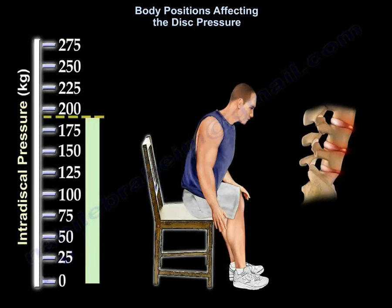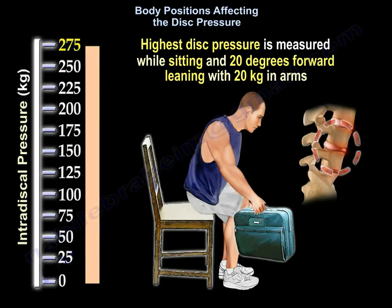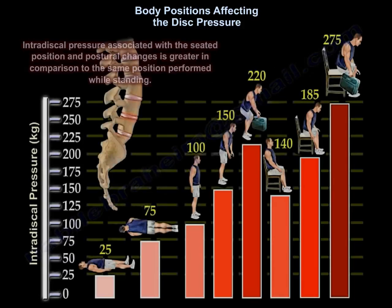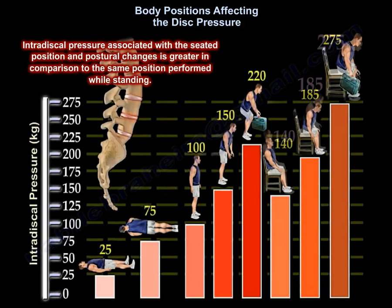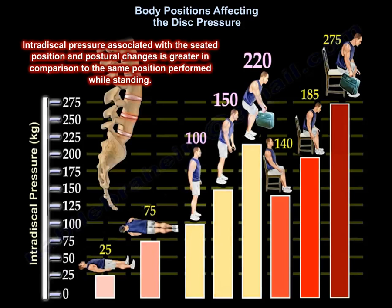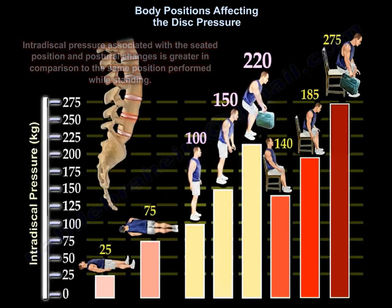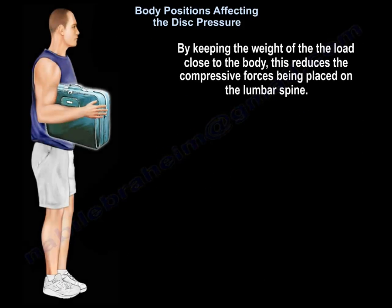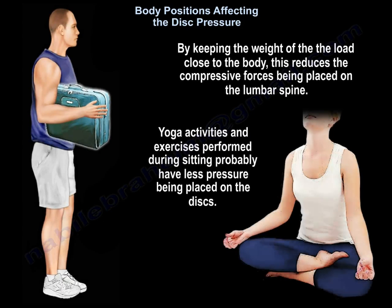The highest disc pressure is measured while sitting and leaning 20 degrees forward with 20 kilograms in the arms. Intradiscal pressure associated with the seated position and postural changes is greater in comparison to the same position performed while standing. By keeping the weight of the load close to the body, this reduces the compressive forces being placed on the lumbar spine.